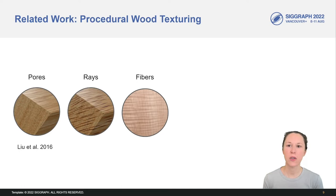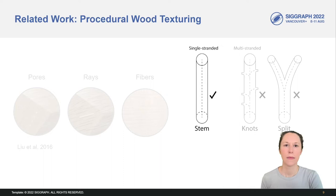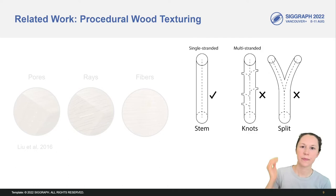Procedural texturing is an efficient technique to create volumetric textures with high natural variation. Previous research has proposed functions for reproducing a number of wood features, including pores, rays, and light reflections that depend on fiber directions. But these works are limited to wood from a single-stranded stem. They cannot handle multi-stranded internal skeletons such as knots and splits.